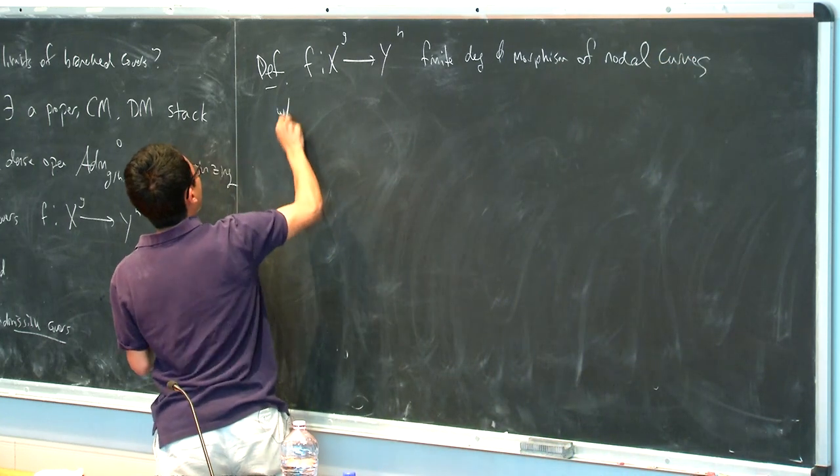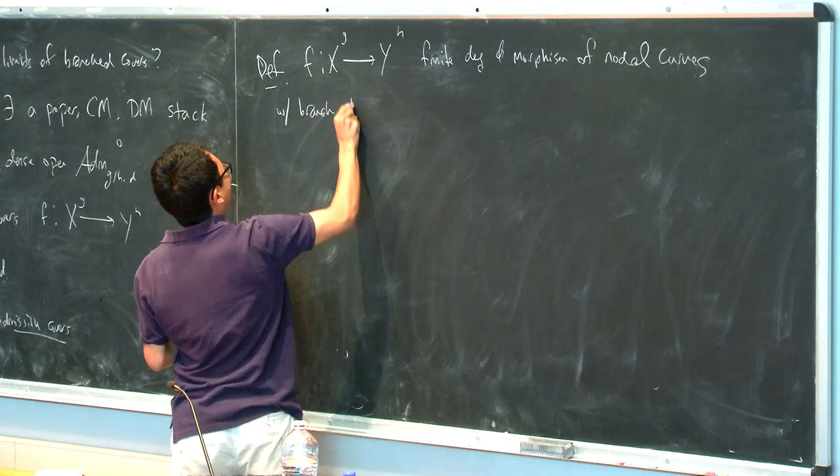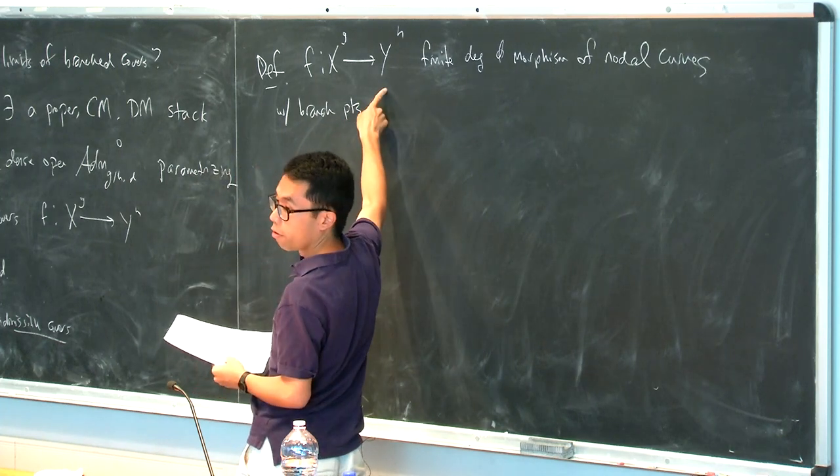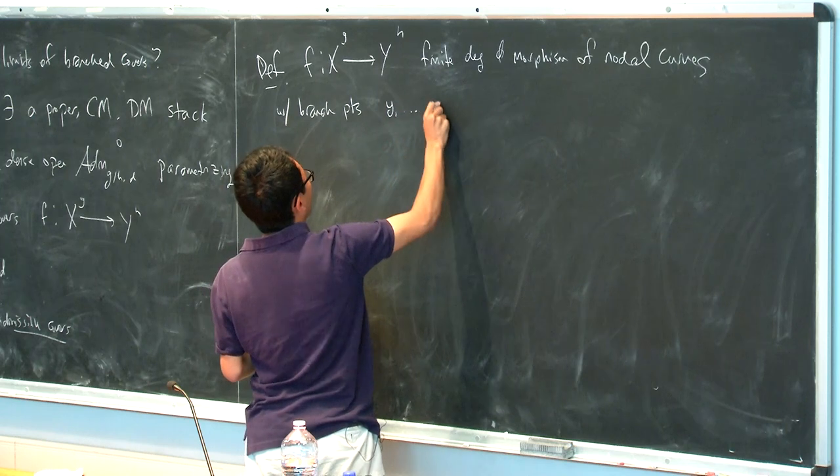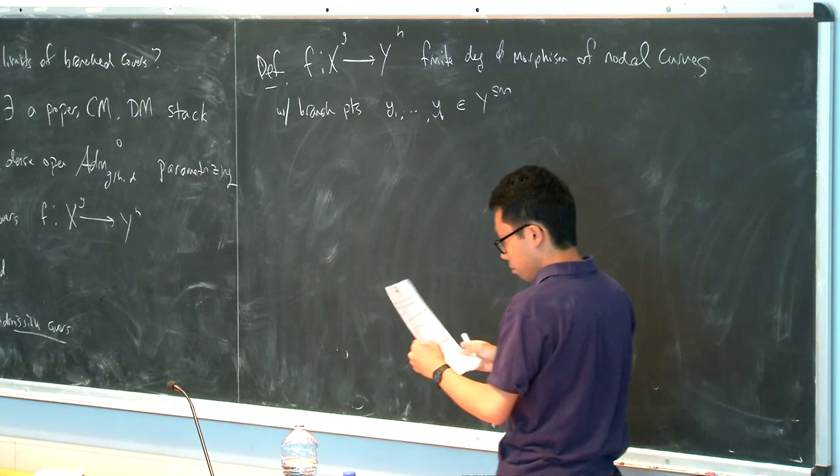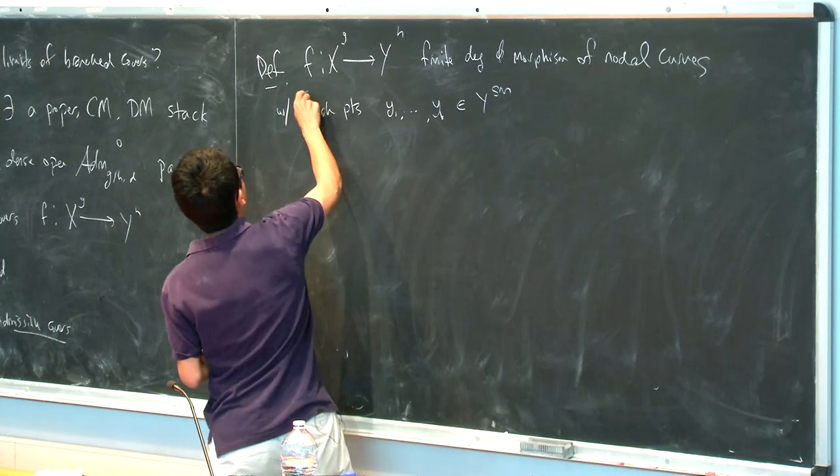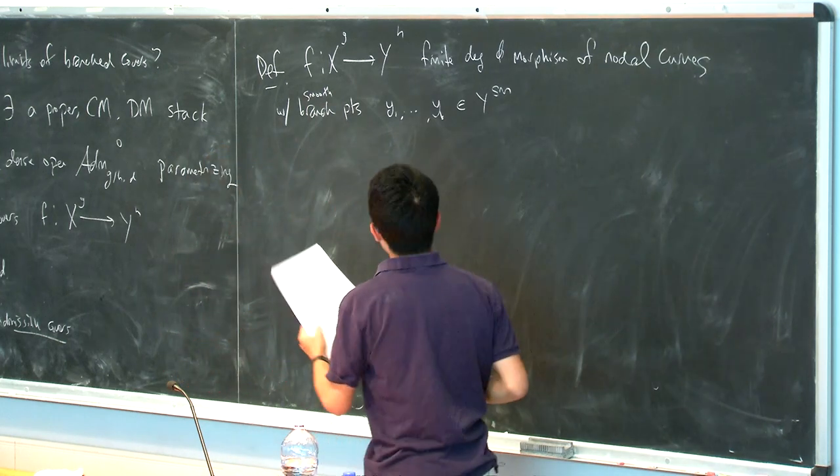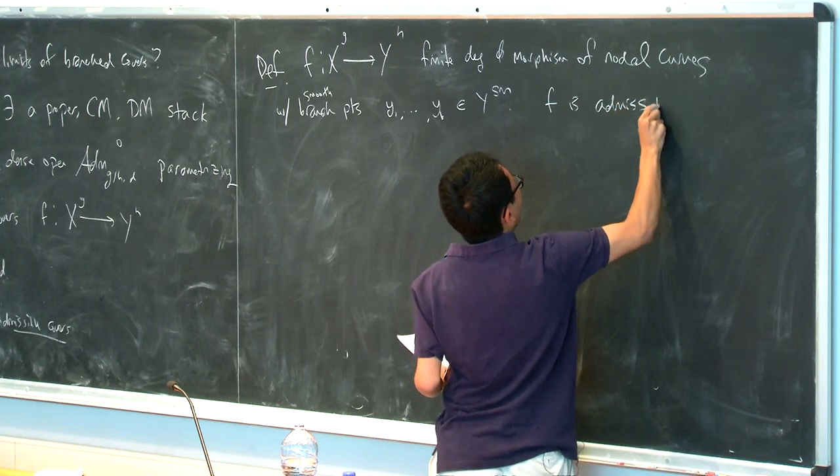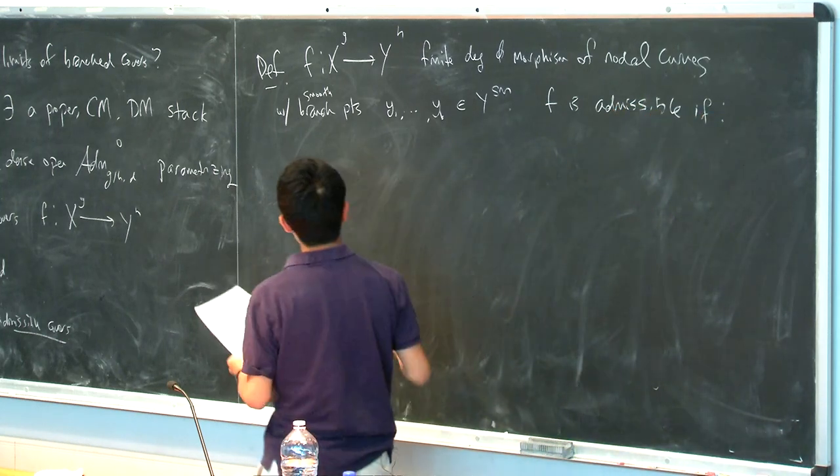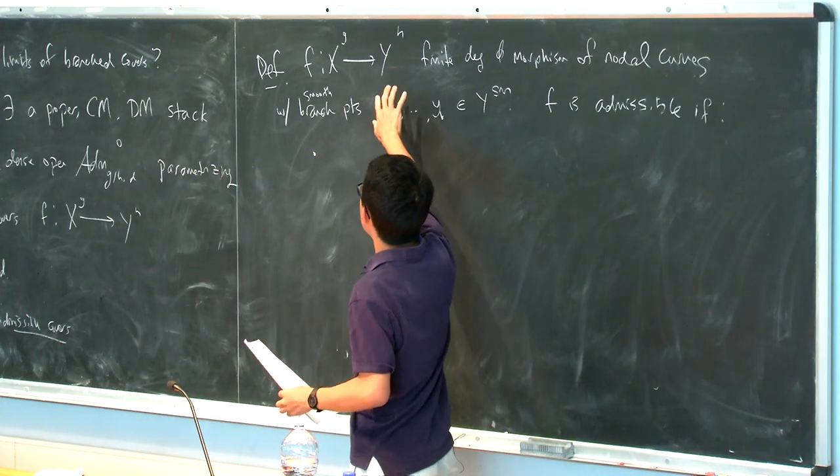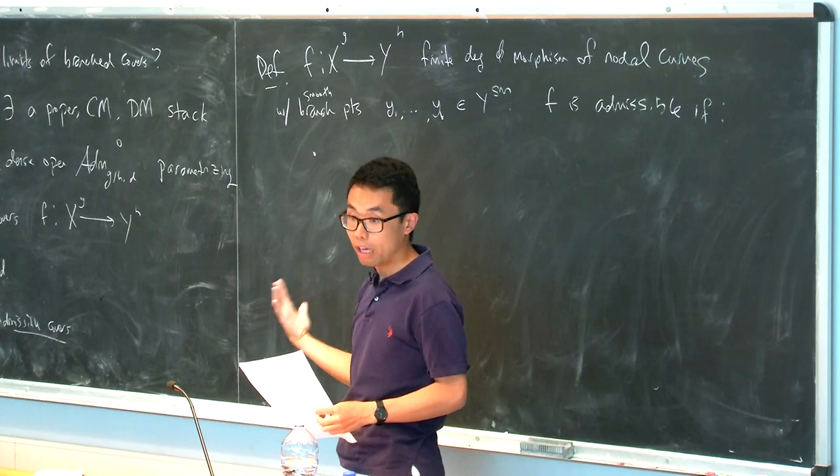So this is going to be a finite degree D morphism of nodal curves. So degree D means degree D over every component of Y. And I'm going to call the branch points, well, I'm just going to think about the branch points that are in the smooth locus of Y. So I'm going to call them y1 through yb, in Y smooth. So with smooth branch points. So that's the setup. So f is admissible if there are going to be four conditions.